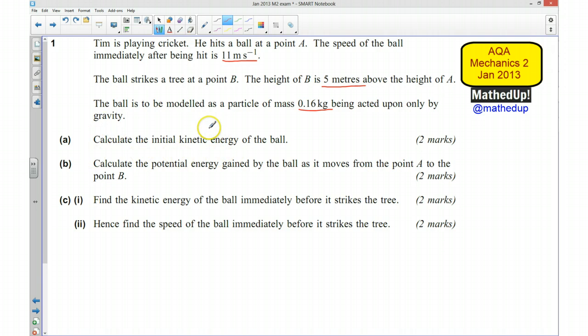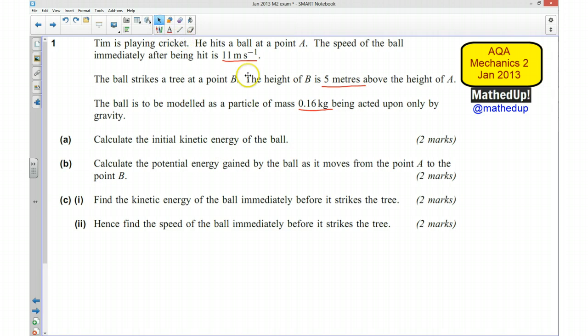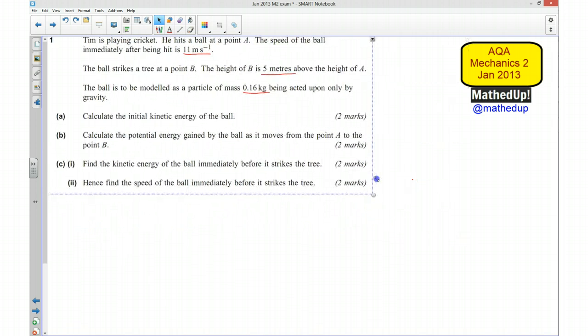So for part A, we need to find the initial kinetic energy of the ball. So I'm going to use the formula half mu squared.